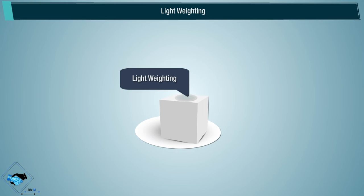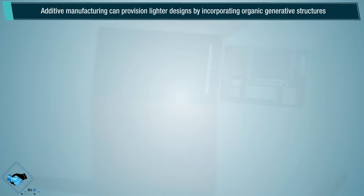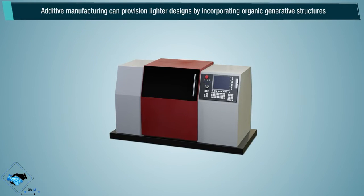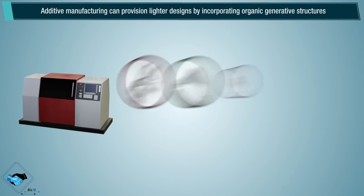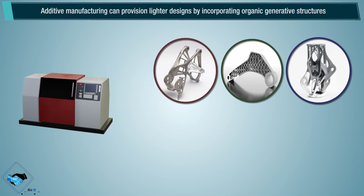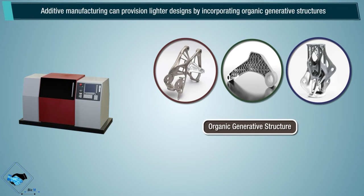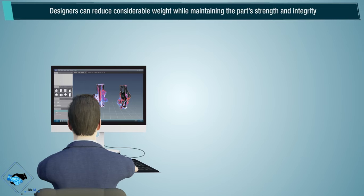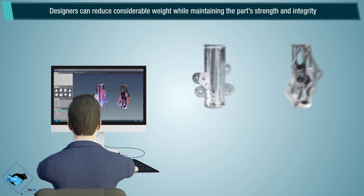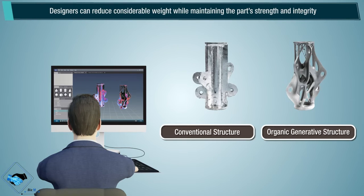Light Weighting: Additive Manufacturing can provision lighter designs by incorporating organic generative structures. Designers can reduce considerable weight while maintaining the part's strength and integrity.